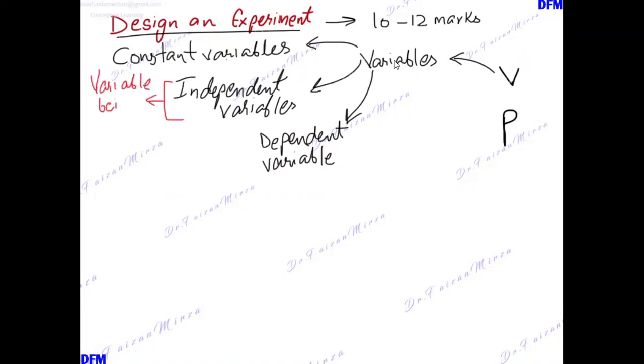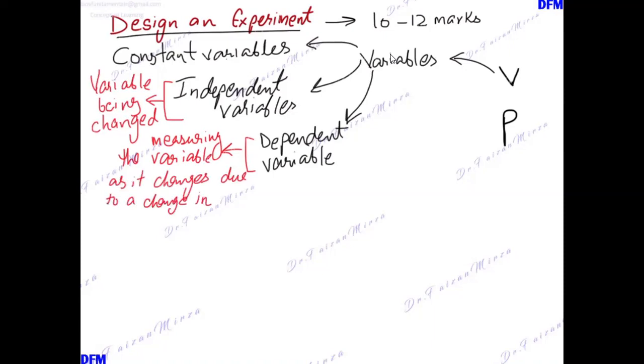The independent variable is the one which you change yourself. The dependent variable is the one which you measure. The change in the dependent variable is completely dependent on the independent variable. Independent variable is taken on the x-axis, dependent on the y-axis. The independent variable is the cause and dependent variable is the effect - whatever changes you see in the dependent variable are because of the cause being changed in the independent variable.